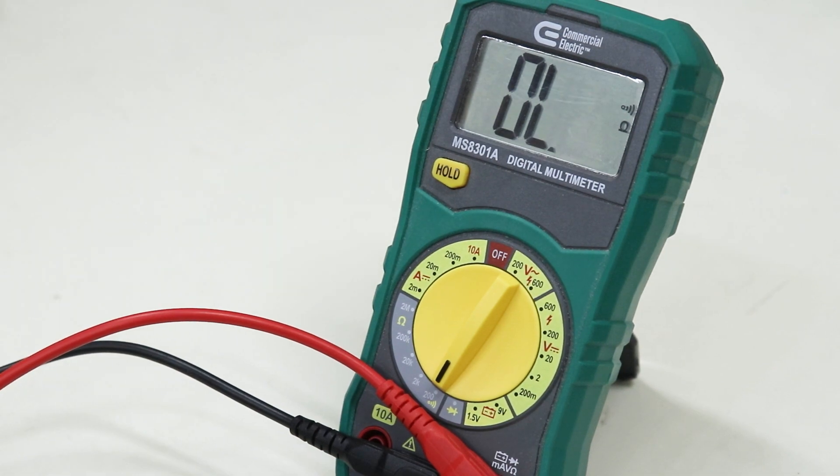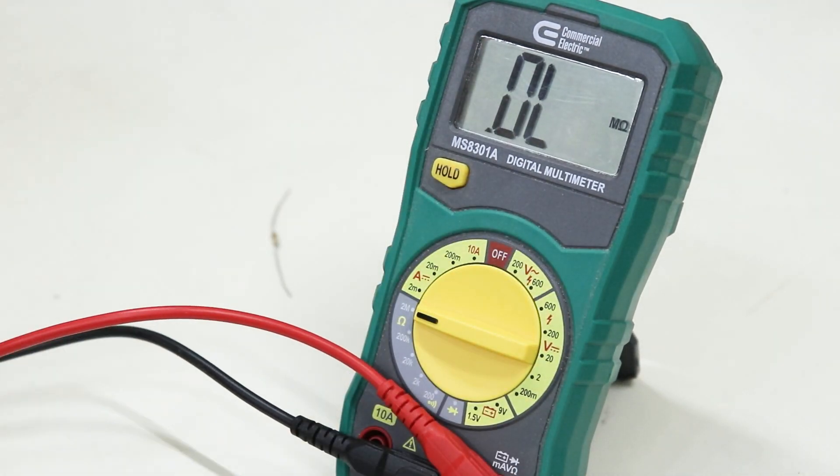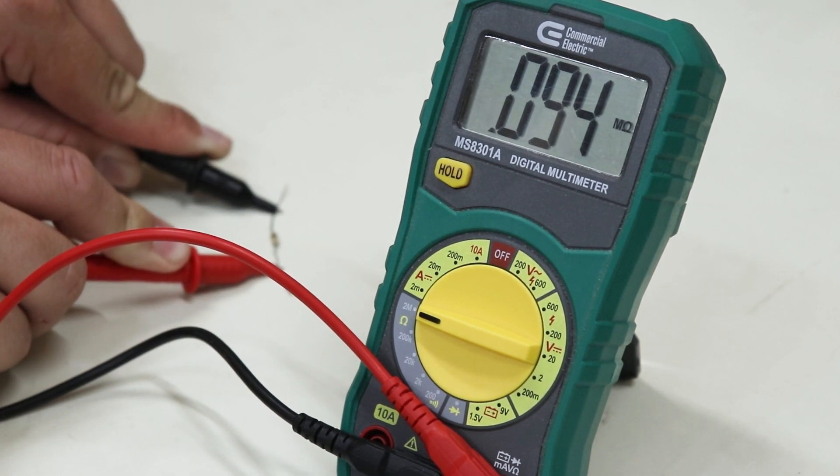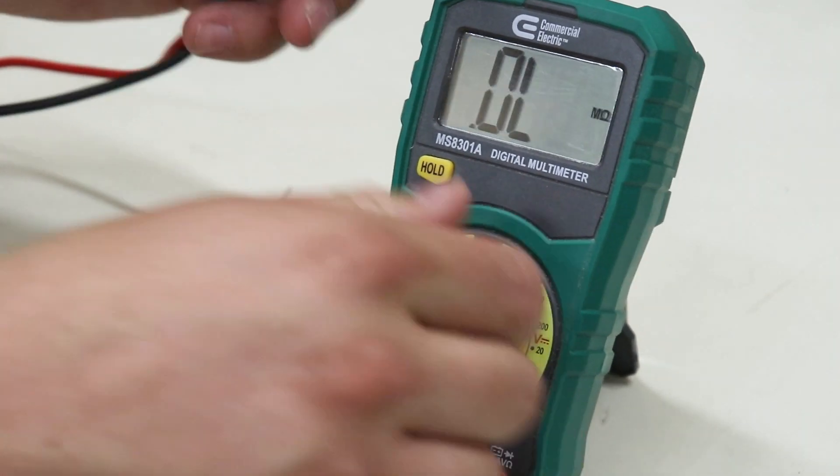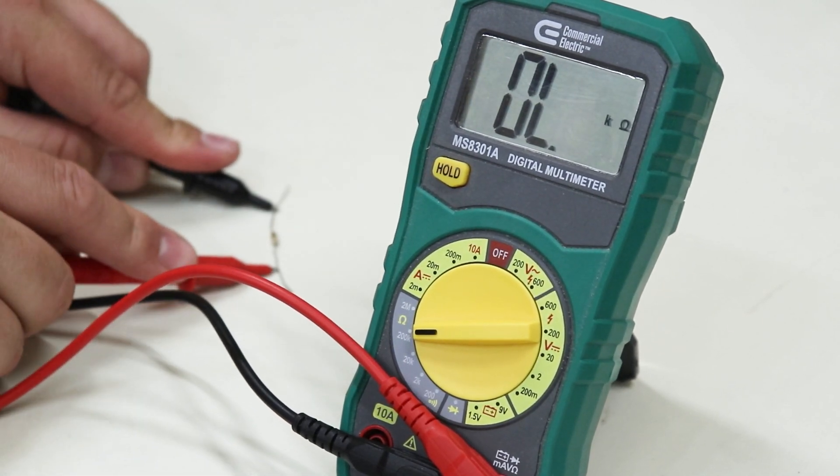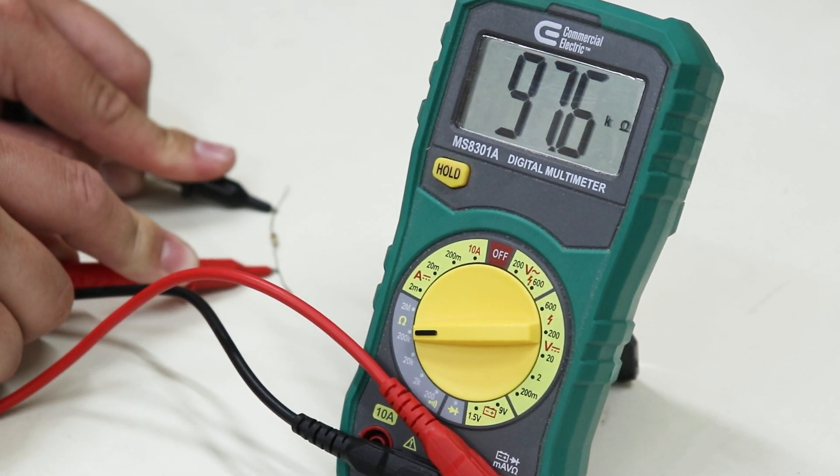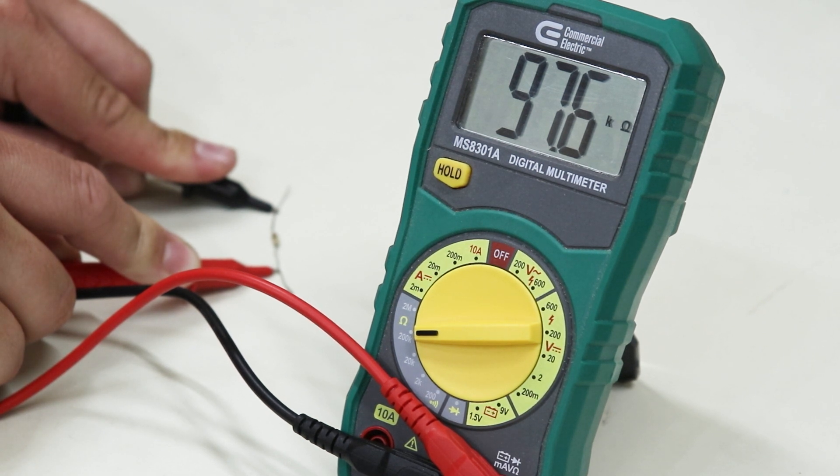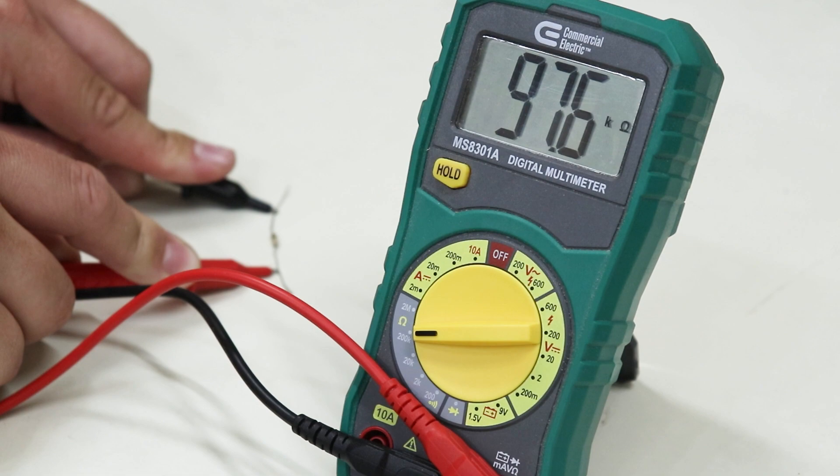Let's try one more resistor. So I'm going to move it back up to two mega-ohms, apply the leads, and I already have some digits of precision here. So this resistor is 97.6 kilo-ohms. I can't go any lower because the next range down is below this value.